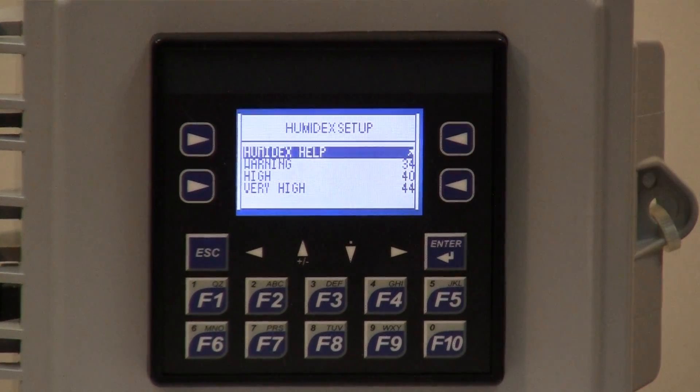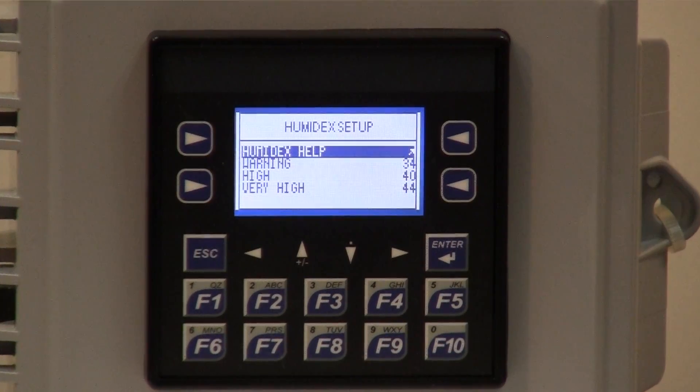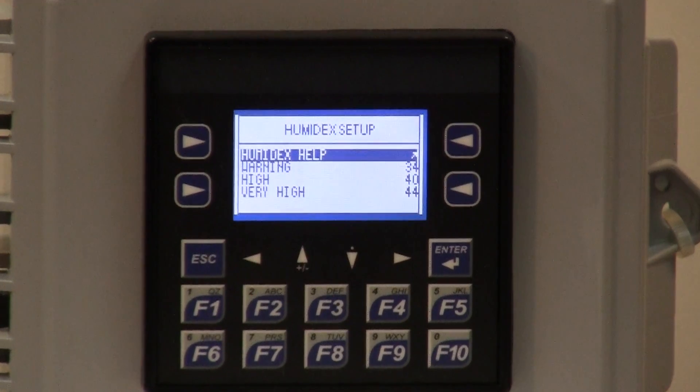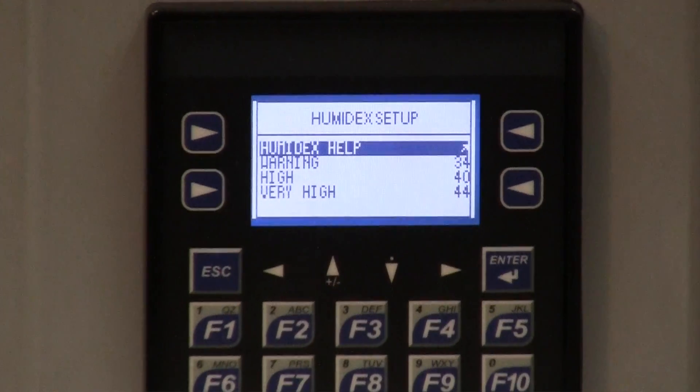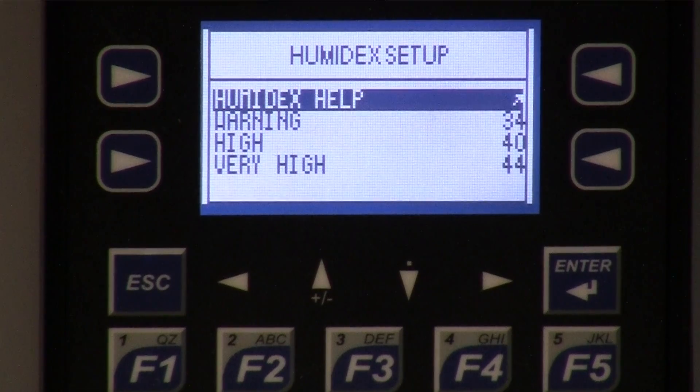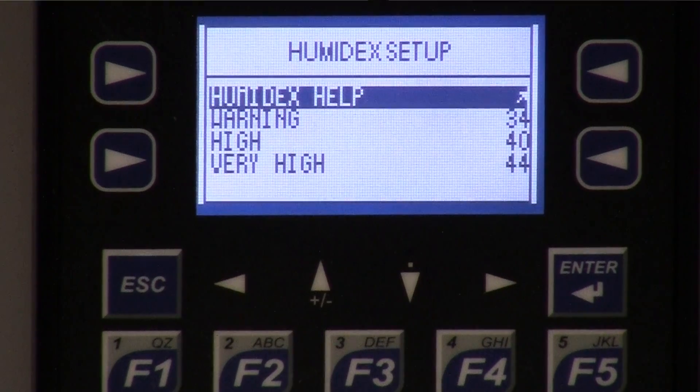here in the Humidex setup, we can set the warning, the high, and the very high set points. These correspond to a yellow light, a red light, and a flashing red light, respectively.